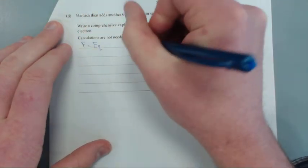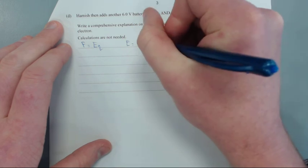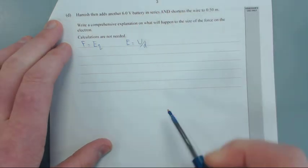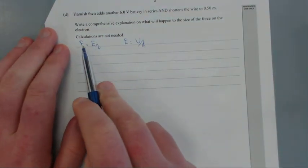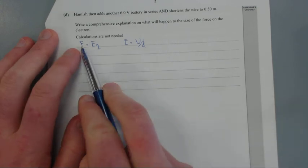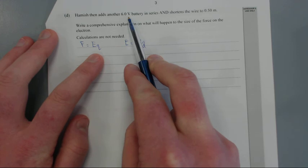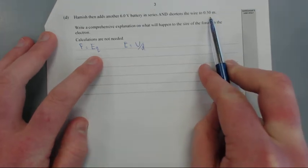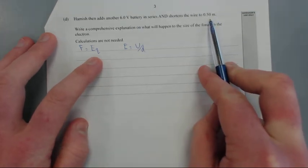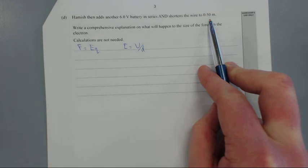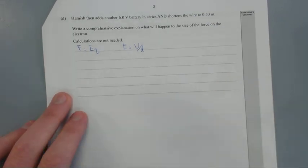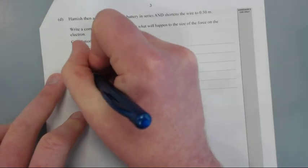I'll start with E equals V over d. I'm looking at the force which is electric field times charge, but I'm doubling the voltage and halving the wire because originally it was 1 meter, now it's going down to half a meter. Adding a 6 volt battery in series will double the voltage.